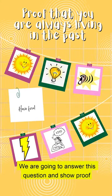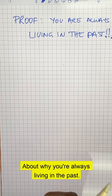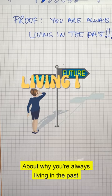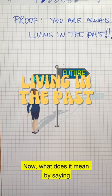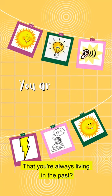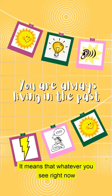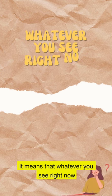We are going to answer this question and show proof about why you're always living in the past. Now what does it mean by saying that you're always living in the past? It means that whatever you see right now that you think is happening is not happening.